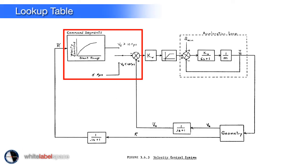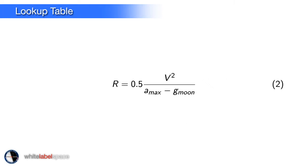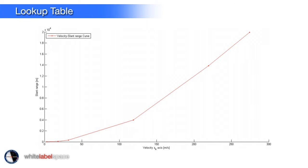Returning to the lookup table: it contains a graph defined by an equation where range depends on measured velocity, a parameter AMAX, and the lunar gravity constant. For Surveyor, AMAX was set to 12.58 feet per second squared — a value that limits output and keeps everything within engine and sensor limits. However, the value stated in the design document differs from the curves found in post-flight documents, suggesting the parameter may have been slightly adjusted in the final implementation.